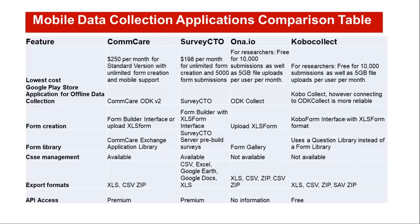We'll start with the mobile data collection application comparison table. Some of you may be familiar with ODK (Open Data Kit), and others may know platforms like Kobo Collect, ONA, SurveyCTO, and CommCare. I've prepared a basic comparison of features across these applications. We are comparing CommCare with SurveyCTO, ONA, and Kobo Collect. In terms of pricing, there are free versions of CommCare, but they are limited in the forms you can create and the support you can receive.